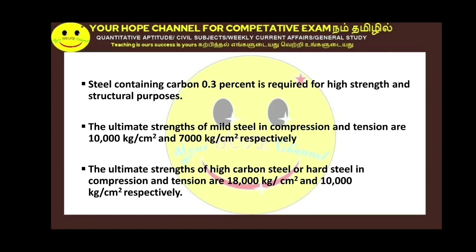High carbon steel (0.7% to 1.5% carbon content): ultimate strength in compression is 18,000 kg/cm², and in tension is 10,000 kg/cm². You can convert these values to Newton per mm² — see the description and note for conversion.